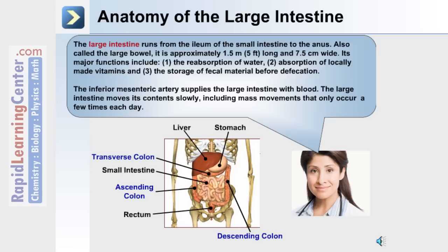The large intestine runs from the ileum of the small intestine to the rectum and anus. It's also called the large bowel. It's approximately 1.5 meters or 5 feet long and is named for its greater width of 7.5 centimeters compared to the small intestine. The major functions of the large intestine include the reabsorption of water, the absorption of locally made vitamins, and the storage of fecal material before defecation.